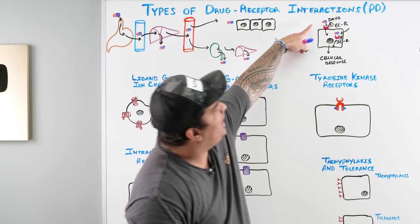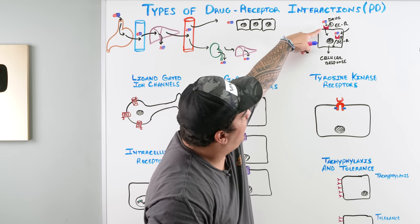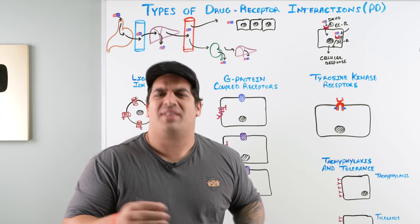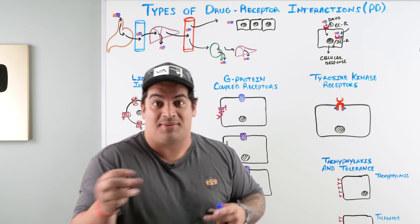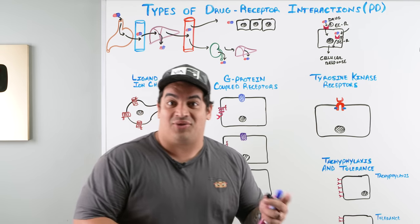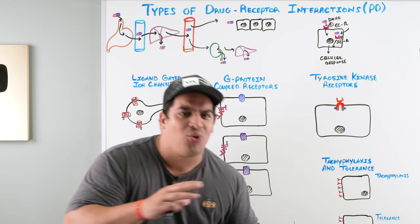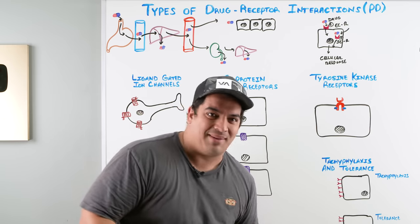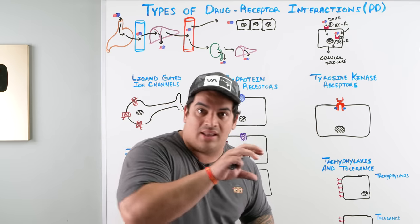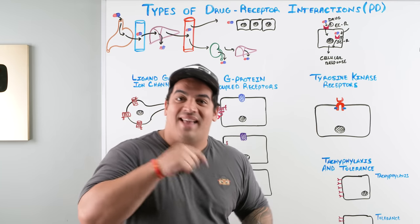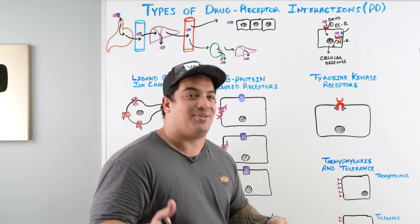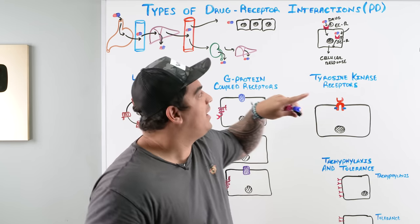We'll cover the different types of extracellular receptors, examples of drugs that act on them, intracellular receptors, and then we'll discuss desensitization — also known as tachyphylaxis — and tolerance with respect to drug-receptor interactions.